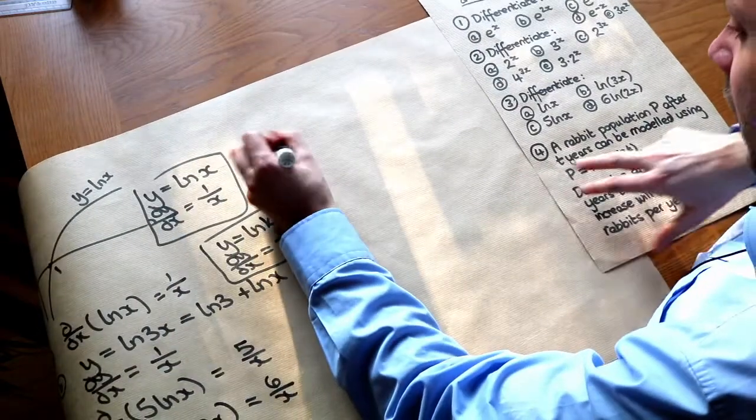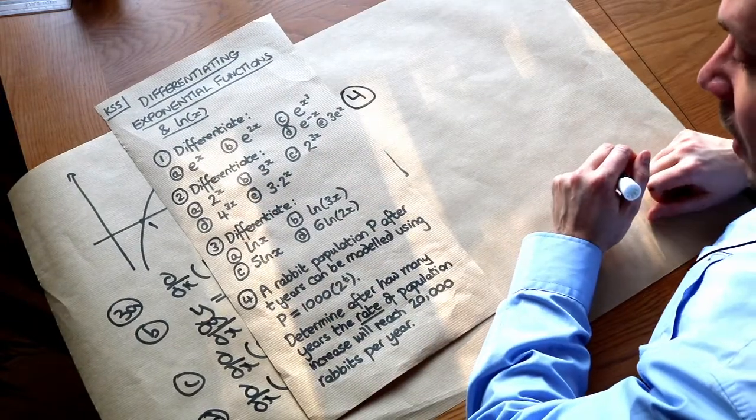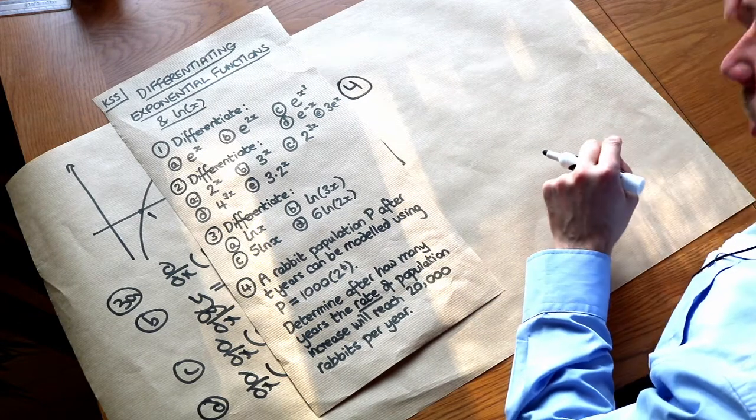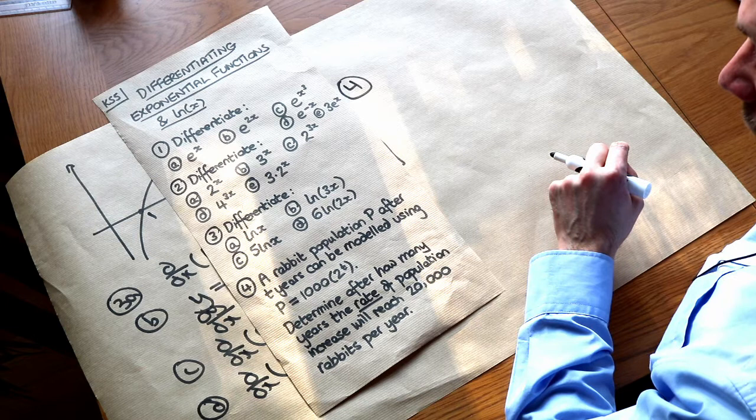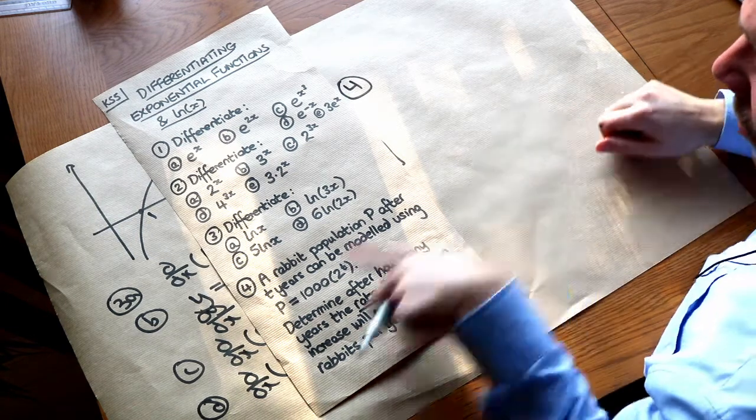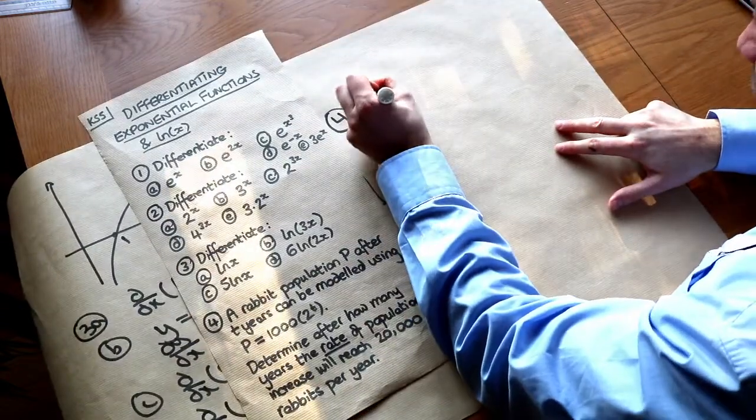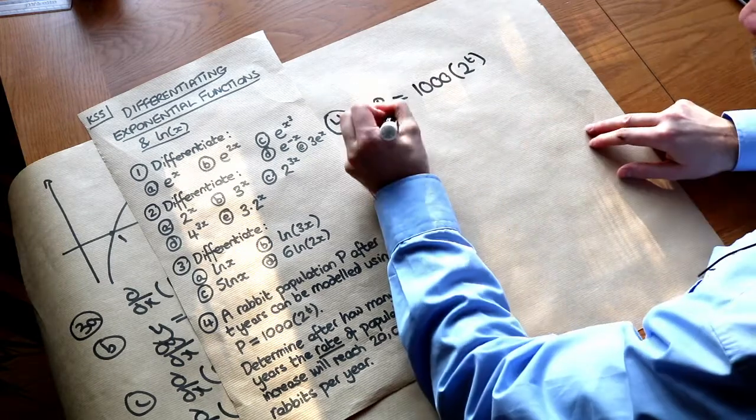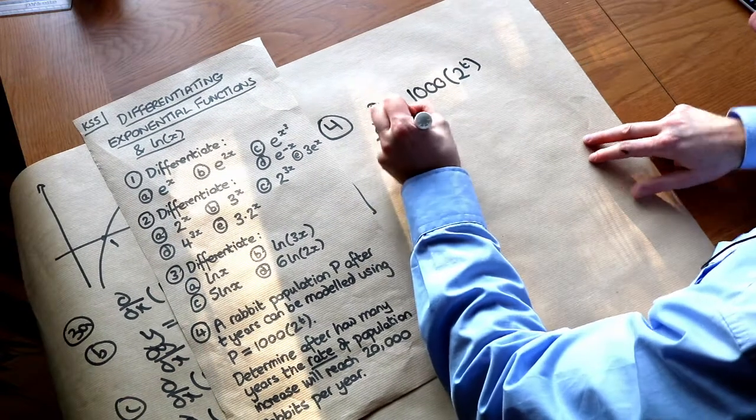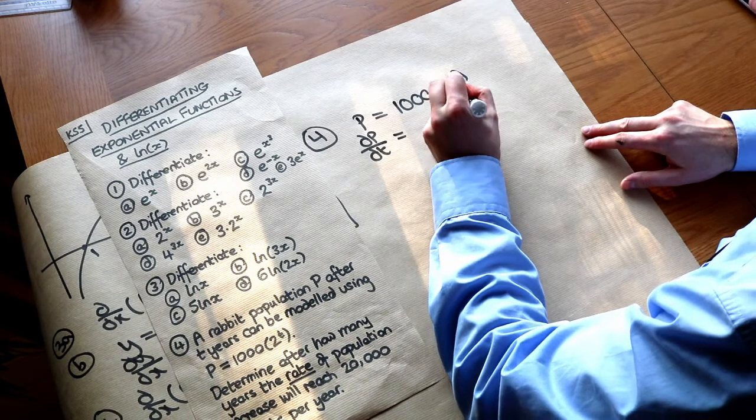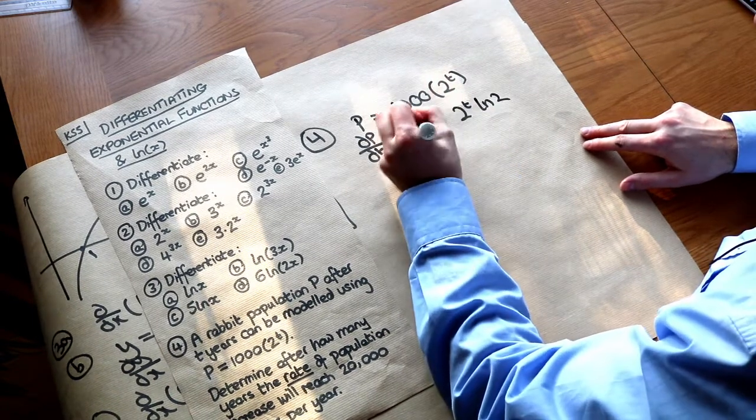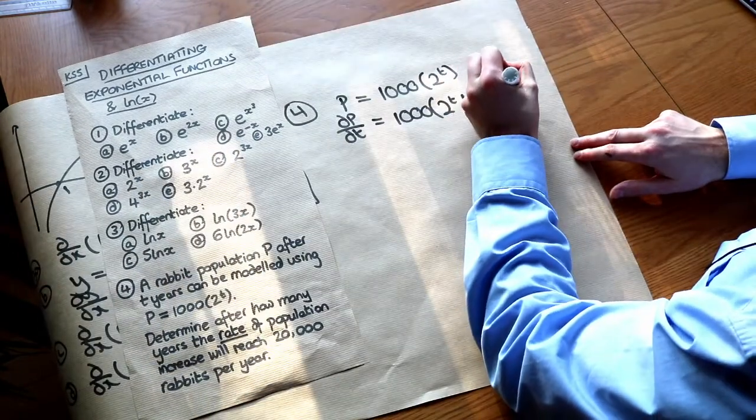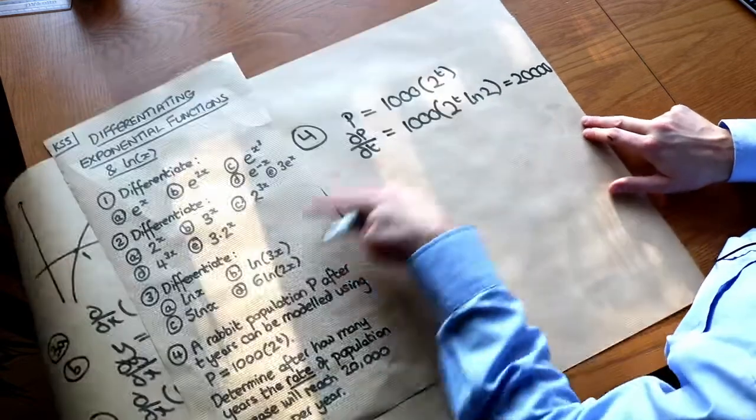Now we've finally got this applied question here. This modelling question. They do like modelling in A level exams for example. So rabbit population p after t years can be modelled using p equals 1,000 times 2 to the t. Determine after how many years the rate of population increase will reach 20,000 rabbits per year. So the rate of population increase, that's the rate of change of p. So that's dp/dt. So if p is equal to 1,000 times 2 to t then the rate of change, any rate is always over dt. So it's dp/dt. It's a rate of its over dt. Now we know to differentiate 2 to the t we just have to times by ln 2. But we scaled it by 1,000 so we've still got that 1,000 on the front. And we're asking when will this rate of change be equal to 20,000? So we want to set this equal to 20,000.